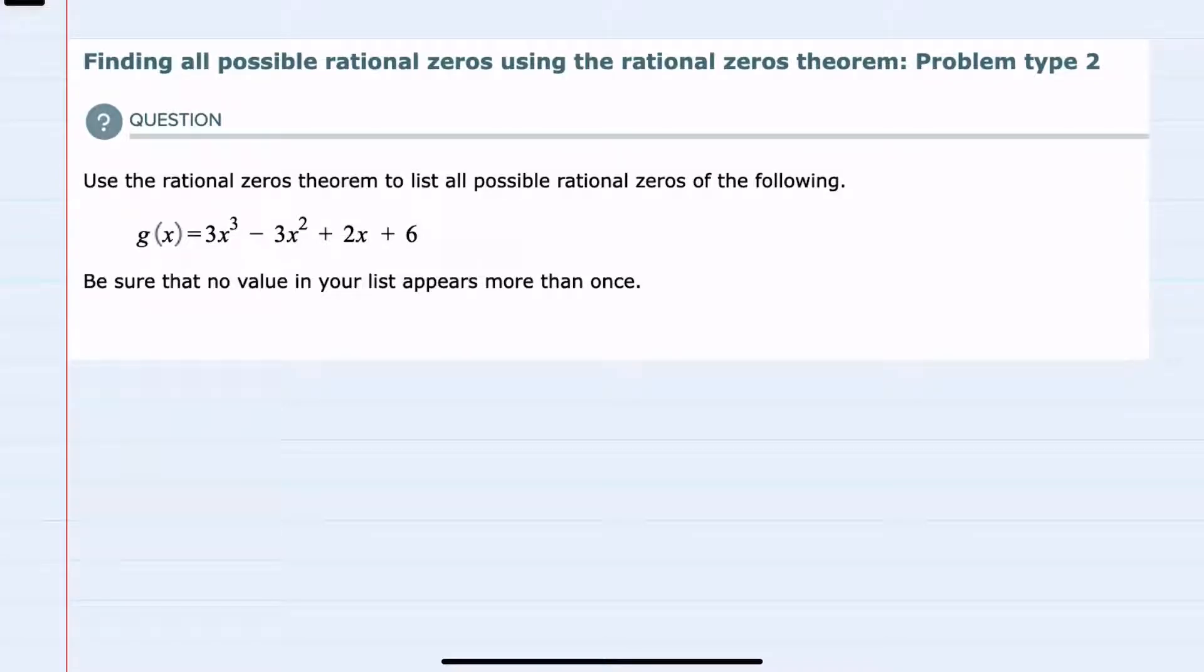In this video I'll be helping you with the Alex problem type called Finding All Possible Rational Zeros Using the Rational Zeros Theorem Problem Type 2.